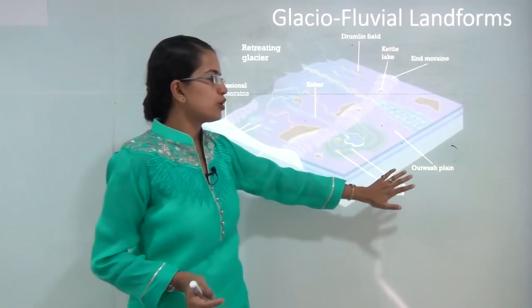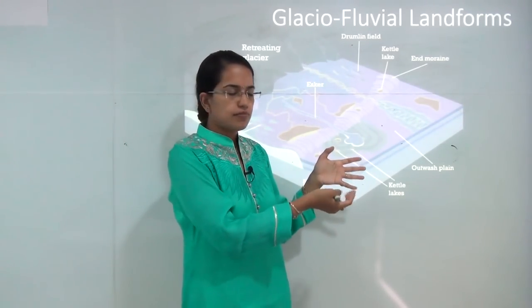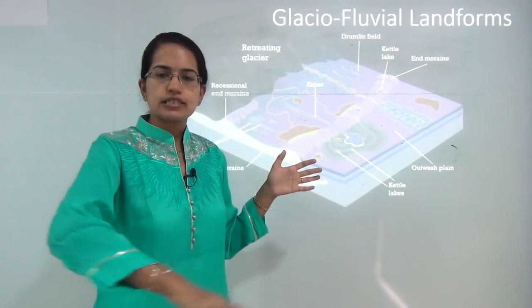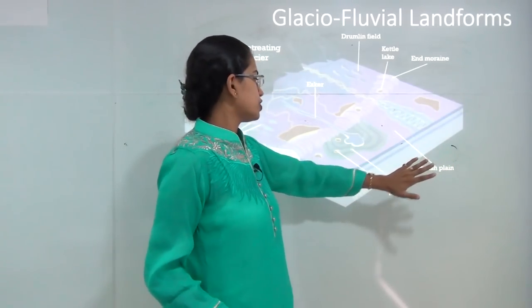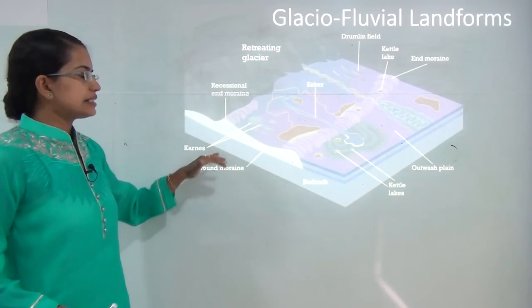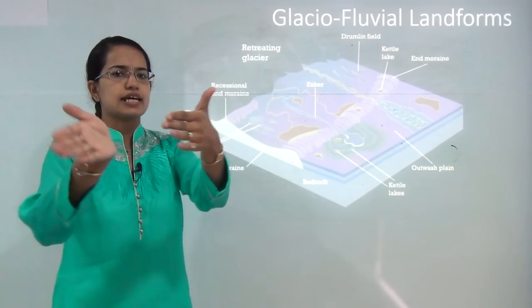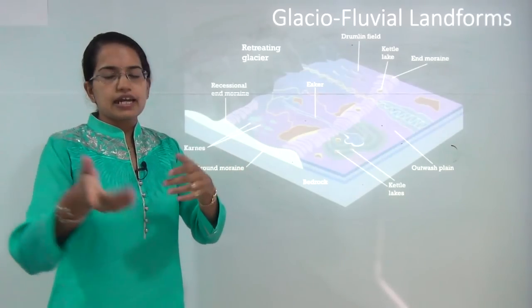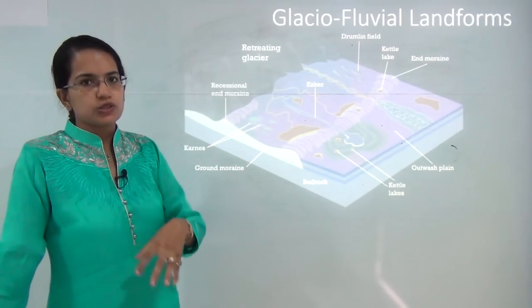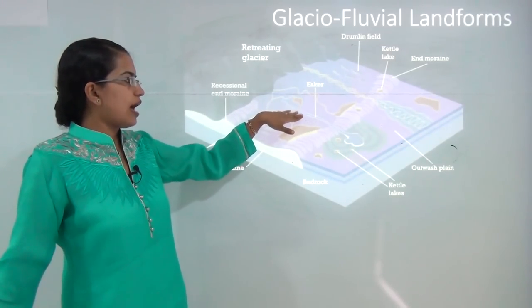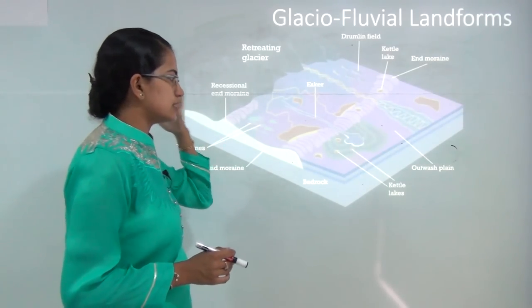The most common glacial fluvial landform is the outwash plain. The glacier moved to an extent, receded back, and due to basin melting there is water flow, creating a plain area that is highly fertile — known as the outwash plain. The next is eskers — ridges that are either straight, curved, or zigzagged in pattern, formed in the region where glacial activity tends to slow down. Velocity increases and water activity picks up, leading to the winding of the ridges and formation of eskers.